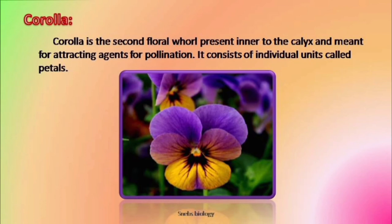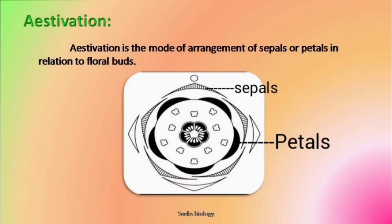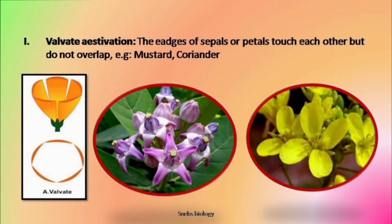So these are the various forms of corolla. Now we will talk about aestivation. Aestivation is the arrangement of the inner whorls of sepals and petals when it is in the form of a bud — how the sepals and petals are arranged on the thalamus in a circular whorl manner. The first type is known as valvate aestivation. In valvate aestivation, the petals or sepals come closer to each other end to end with no overlapping of margins.